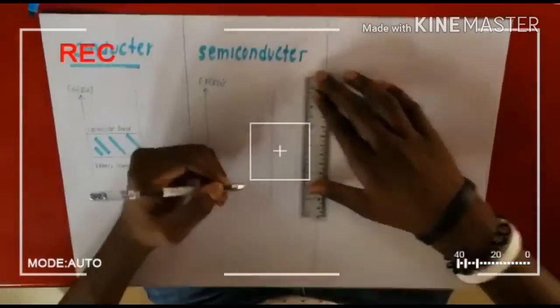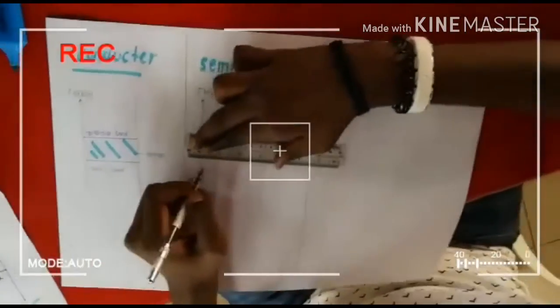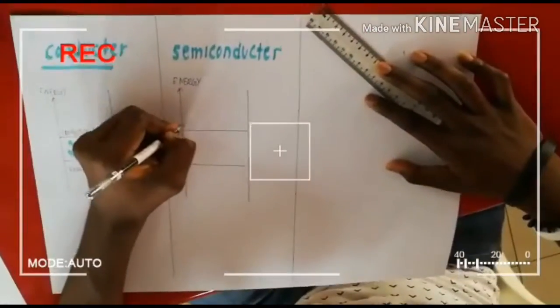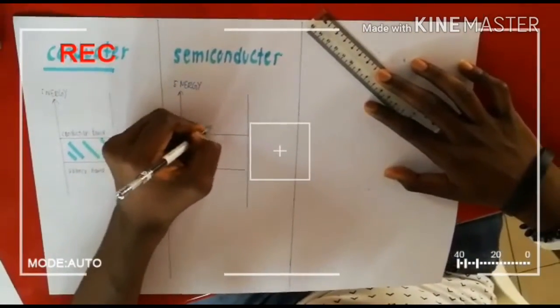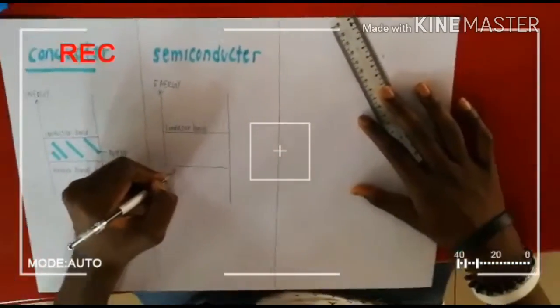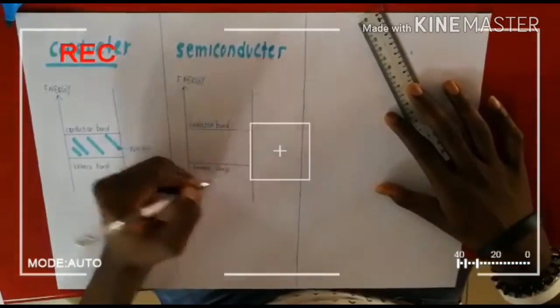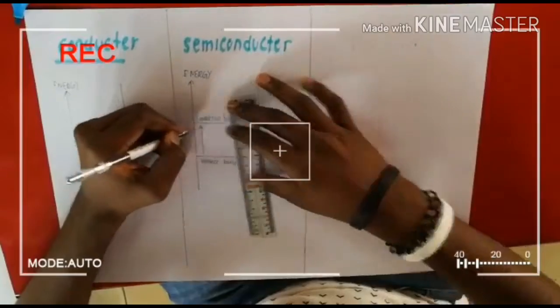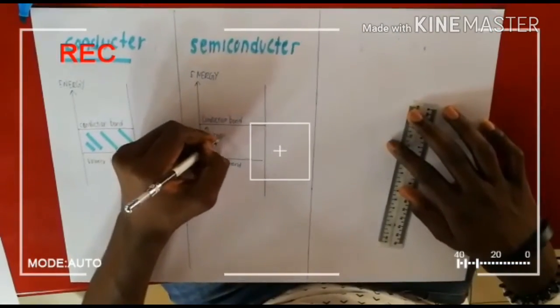For semiconductors, the energy gap is very small. With a small amount of energy supplied, the electrons can easily jump from valence band to the conduction band. Germanium, silicon, gallium arsenide are examples of semiconductors.